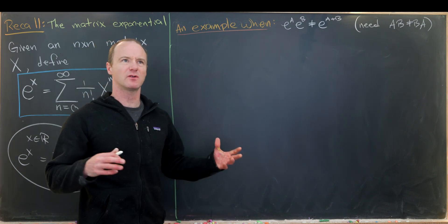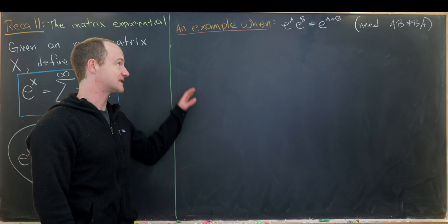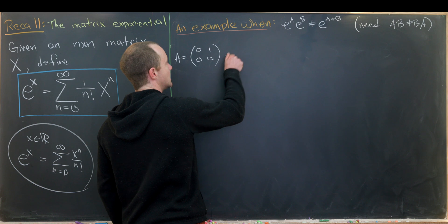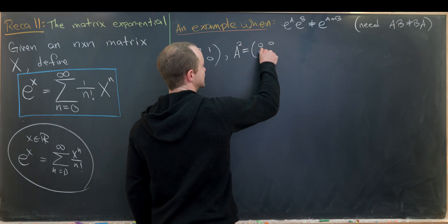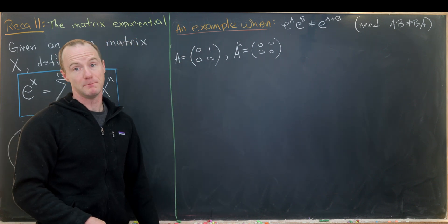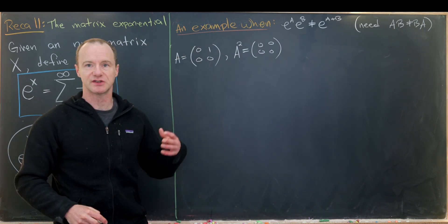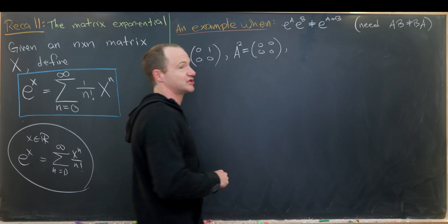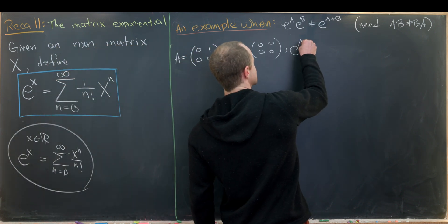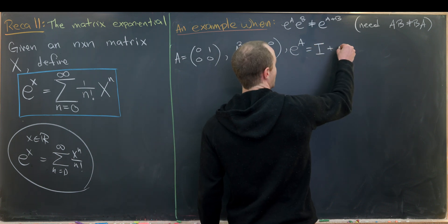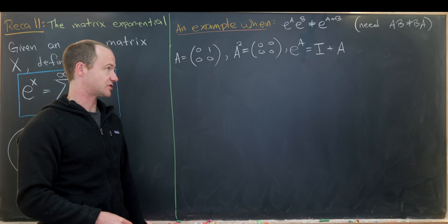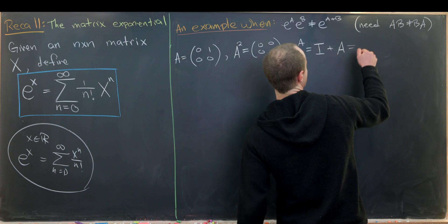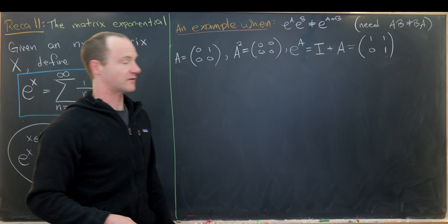We're going to look for the simplest case when e to the A times e to the B is not equal to e to the A plus B. I'll take A to be the two by two matrix [0,1; 0,0]. Note that A squared is the zero matrix, so A cubed, A to the fourth, and so on are all zero. That means the infinite sum collapses to just the zeroth term (the identity) and the first term A over one factorial. So e to the A equals the identity plus A, which is the matrix [1,1; 0,1].